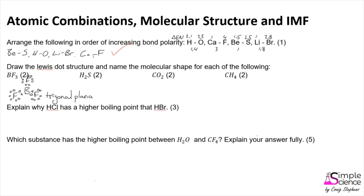Trigonal planar is two-dimensional. The next molecule is hydrogen sulfide, where sulfur is the central atom with six valence electrons. It forms two single bonds with hydrogen atoms. The shape formed is angular or bent. It is important to show the two lone pairs on sulfur, which push the hydrogen bonds downward and change the bond angle to 109.5 degrees, giving a molecular shape of angular.